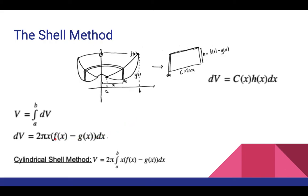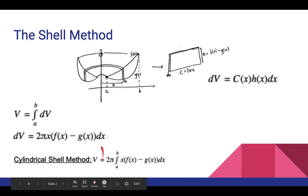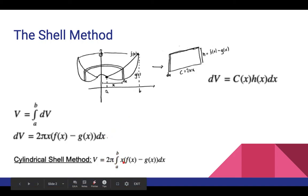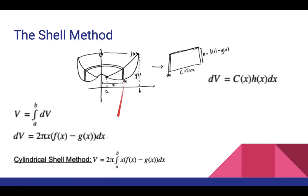We add all these dV's together for each cylindrical shell at each unique x value, which amounts to an integral. So the Shell Method tells us that the volume V from x equals a to x equals b is 2π times the definite integral from a to b of x times [f(x) minus g(x)] dx. Here x is our radius and f(x) minus g(x) is our height. This equation gives us the volume for a solid of revolution rotated about the y-axis.